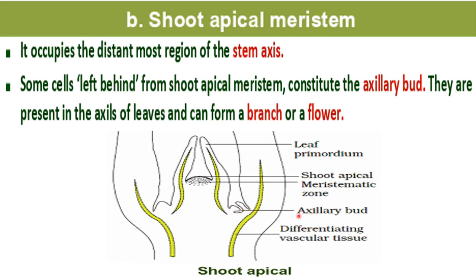Axillary buds are present in the axils of leaves and can form a branch or a flower. From the tip of the plant, these leaves arise — that structure is called leaf primordium. Primordium means the previous structure which later on forms a leaf. The part left behind in the axil of the leaf is called axillary bud, and this axillary bud can give rise to a flower or a branch of the tree.